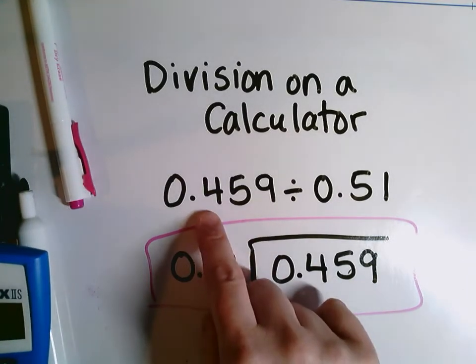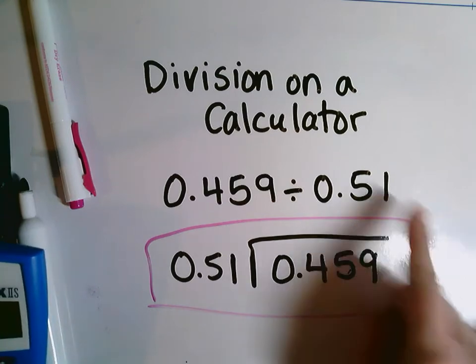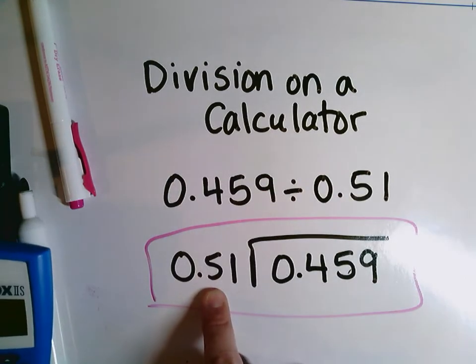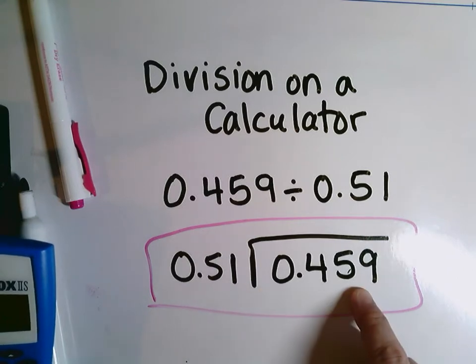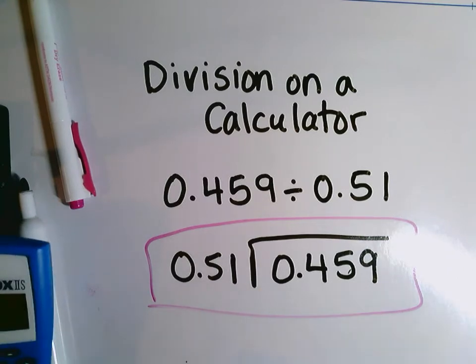We're doing 459 thousandths divided by 51 hundredths. So we need to make sure that we always put the dividend into our calculator first, so that we avoid that big mistake that a lot of students make.